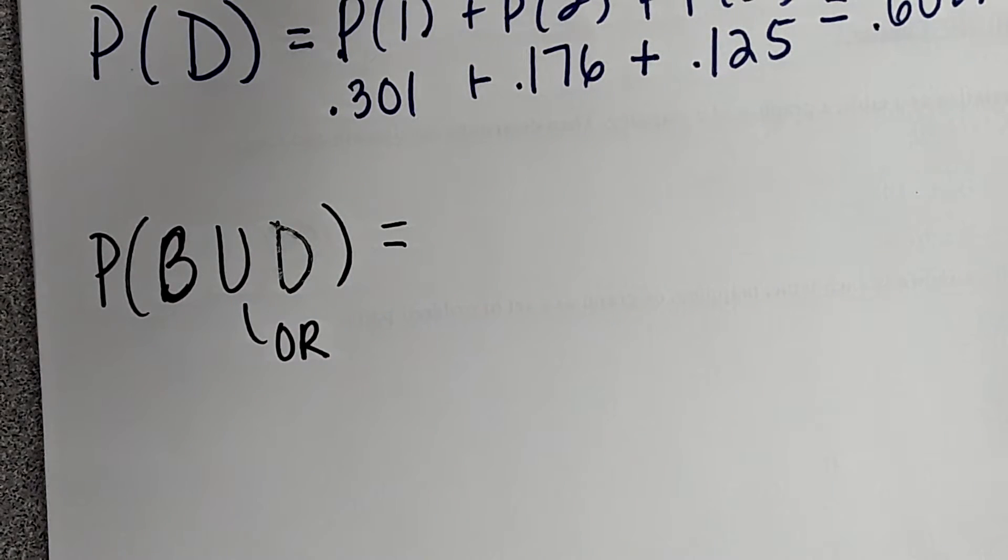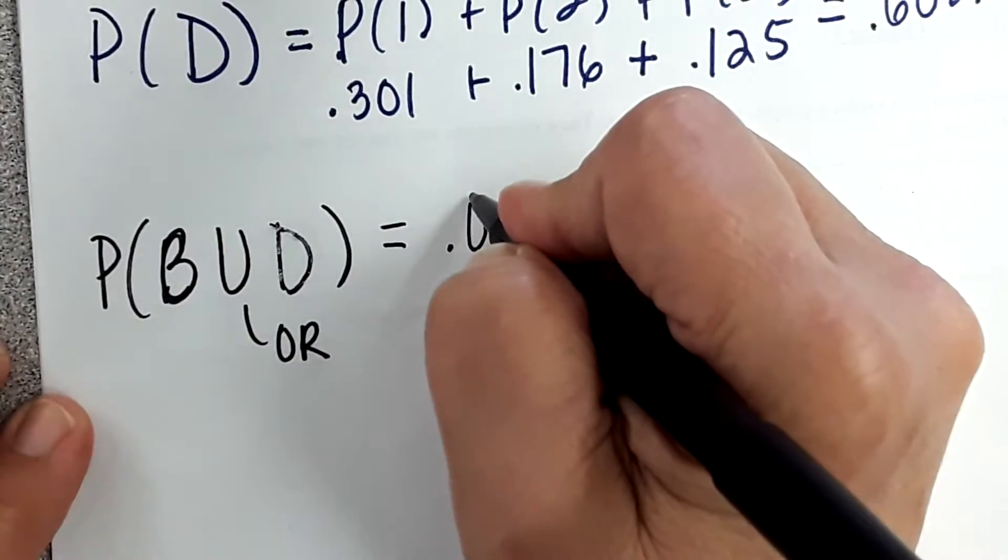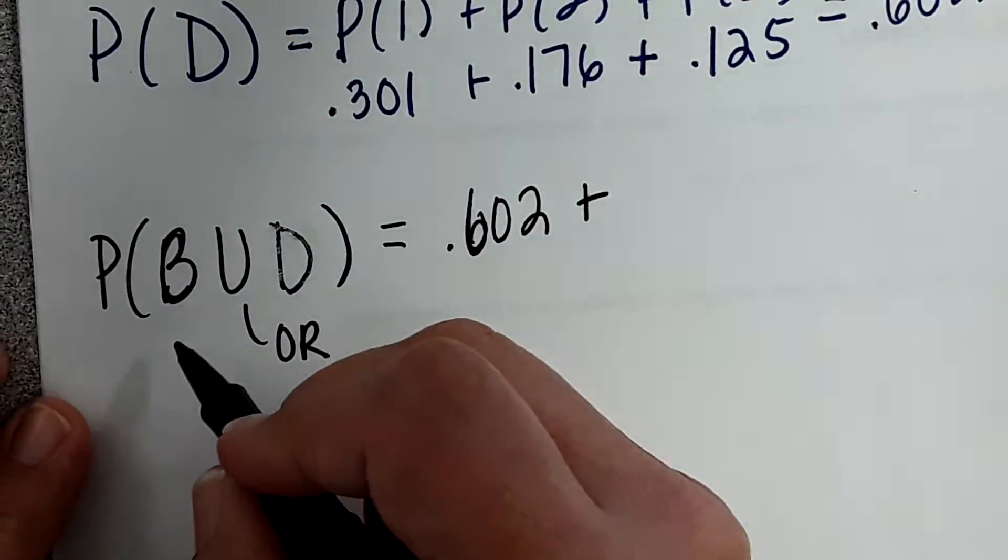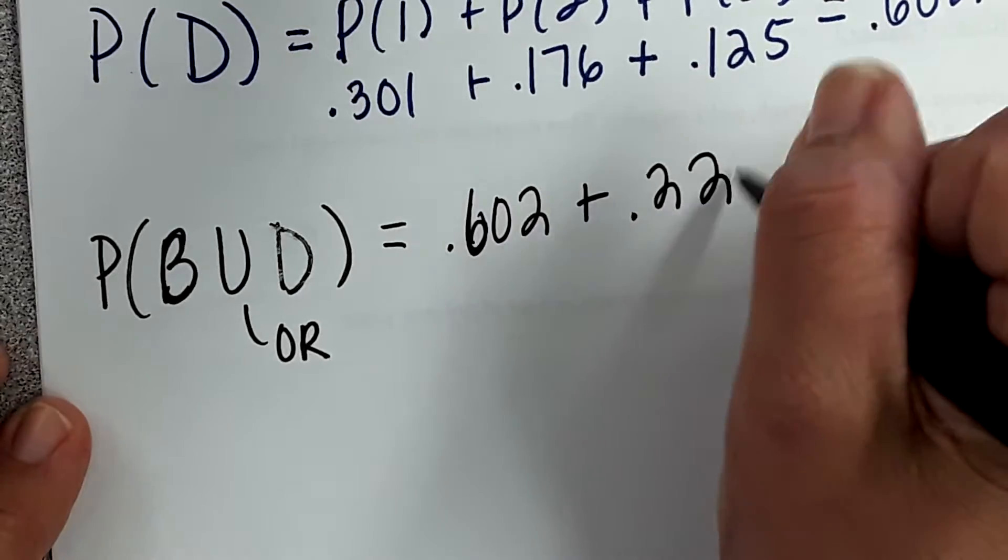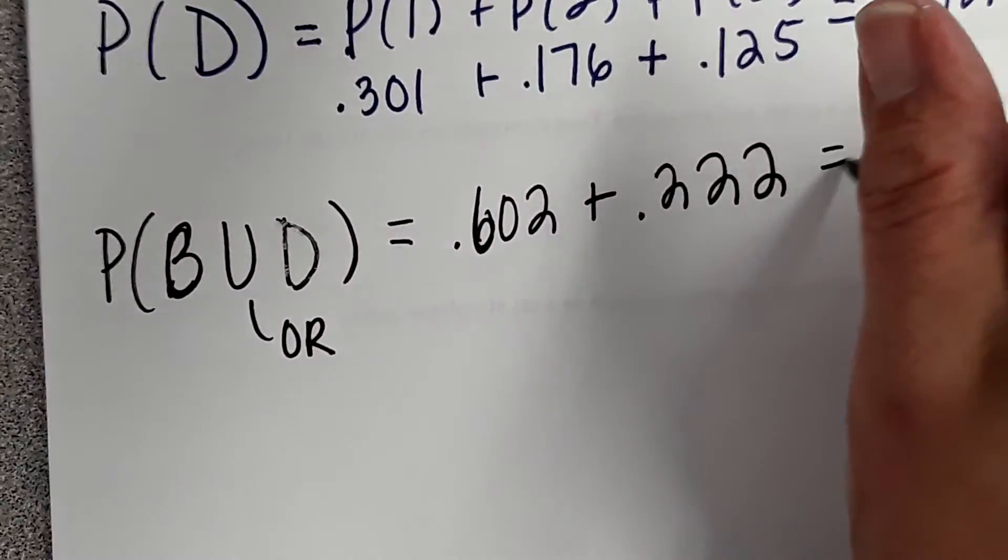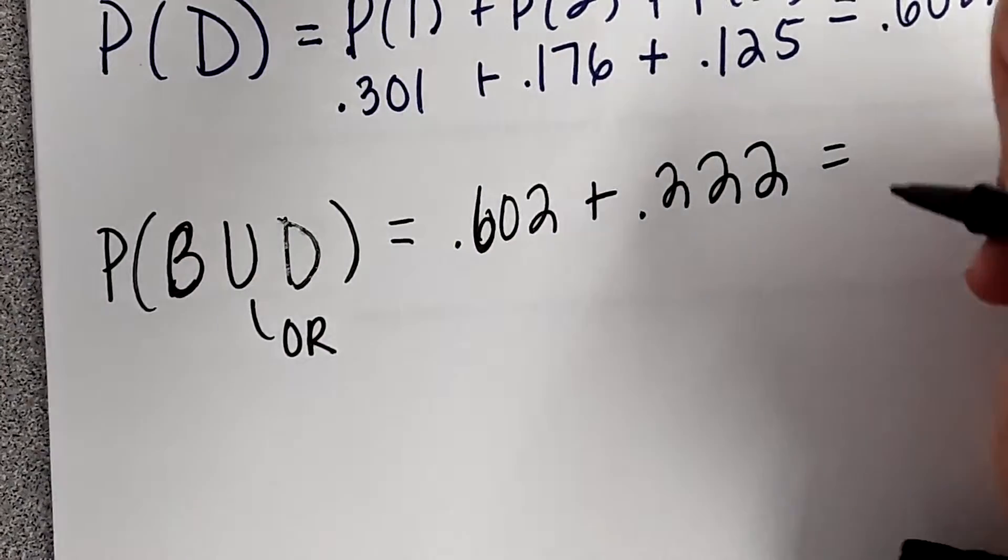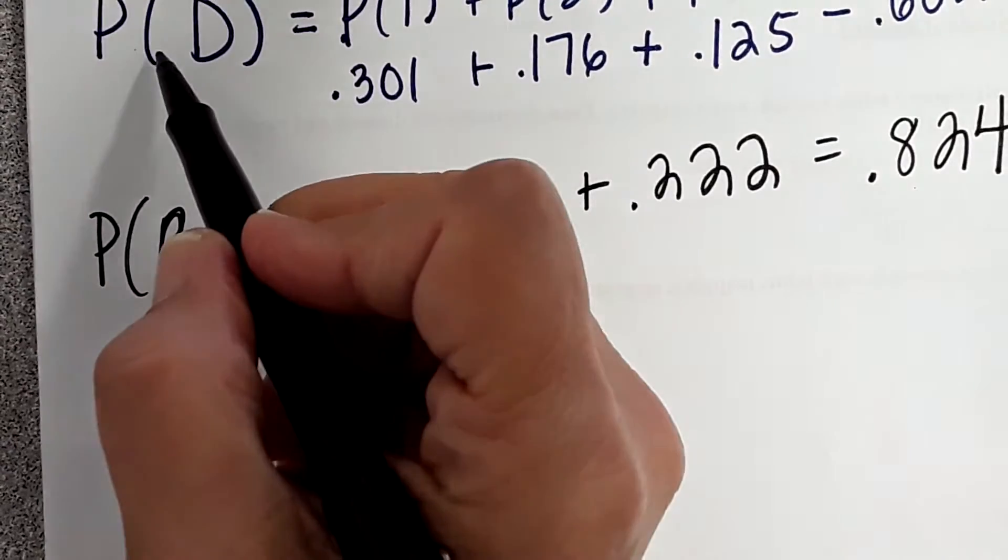First of all, do events B and D have anything in common? So we can add. The event for D is 0.602, and the probability for B they give you. They ask you to find this. In an AP exam question, everything is going to build off each other. What is 0.602 plus 0.222? 0.824. This is A, this is B.